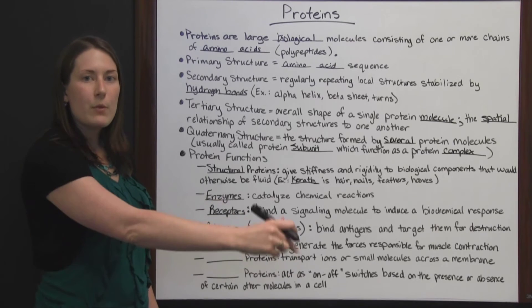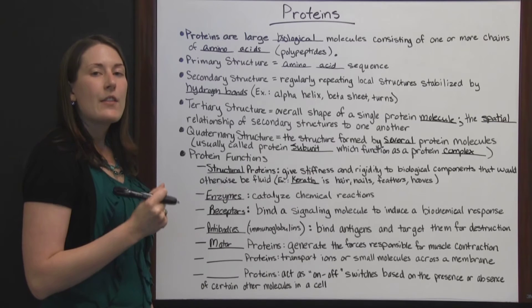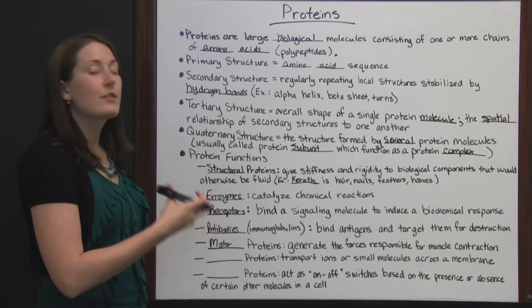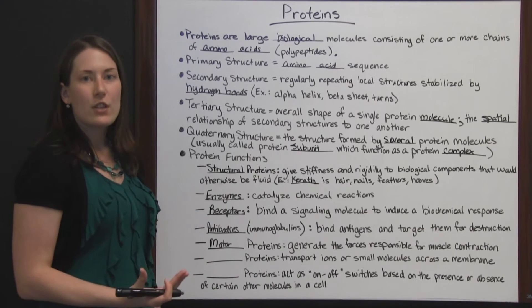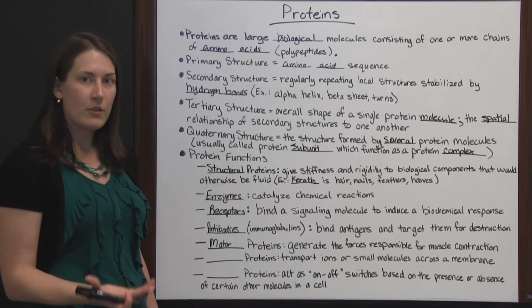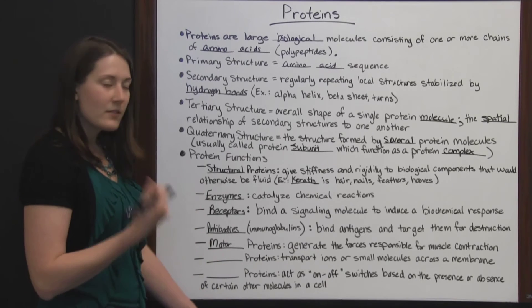If you're able to move your arm back and forth, if you're able to close and open your hand, those are happening because of muscle contractions and those muscle contractions are generated by motor proteins. If we didn't have those, we wouldn't be able to contract our muscles like we are.